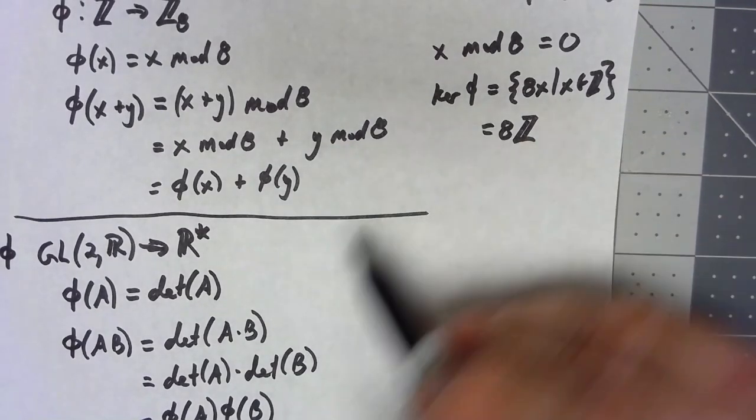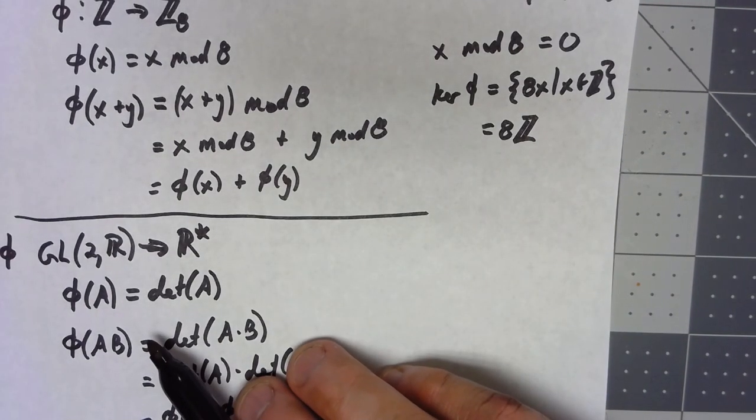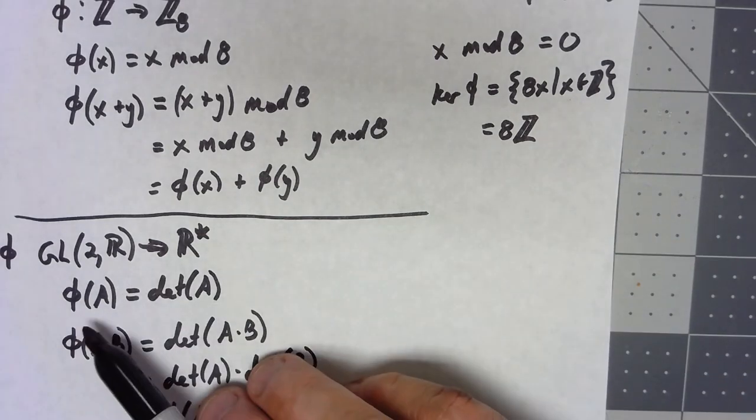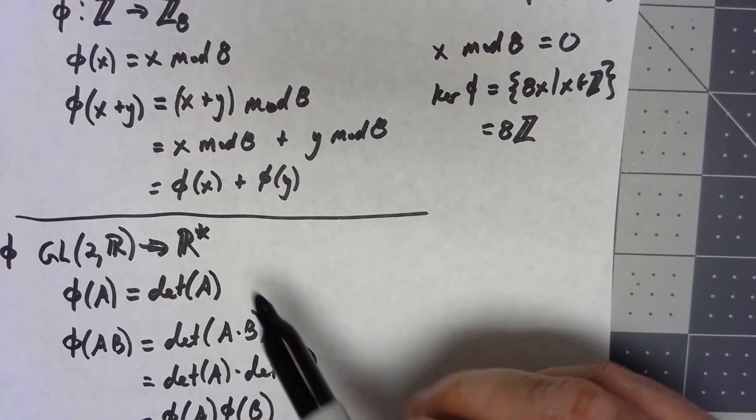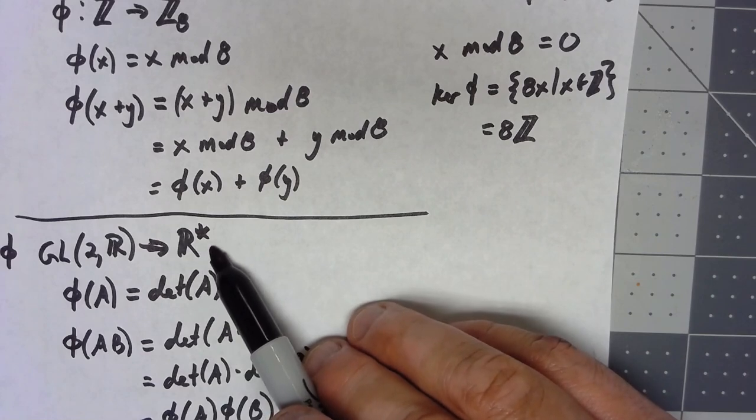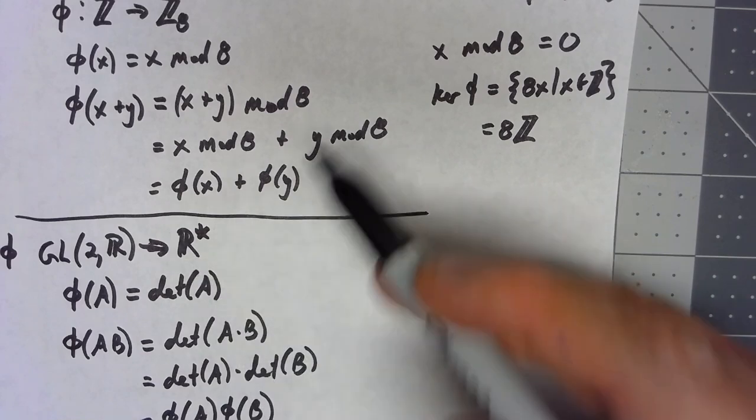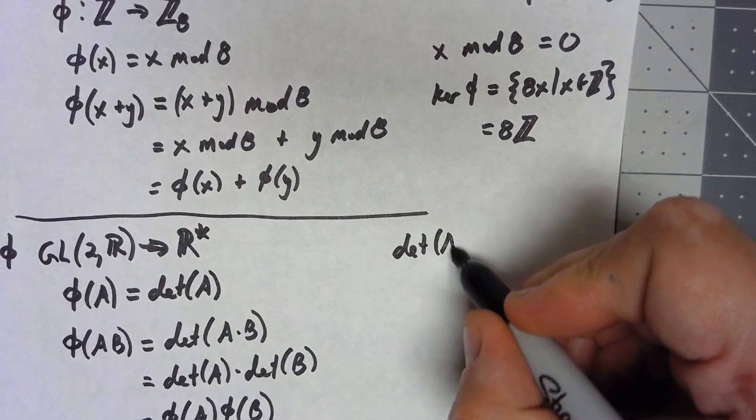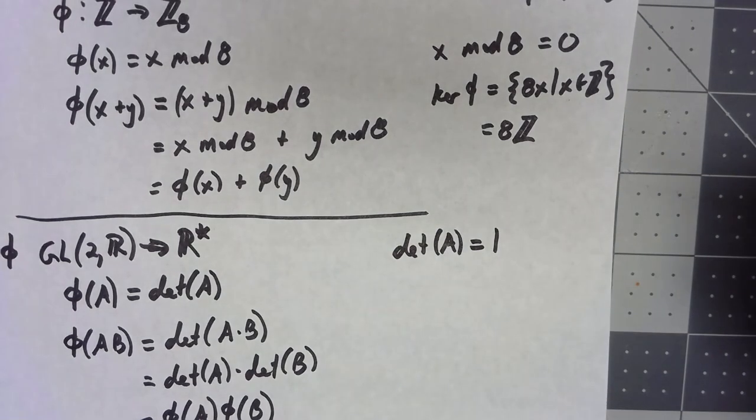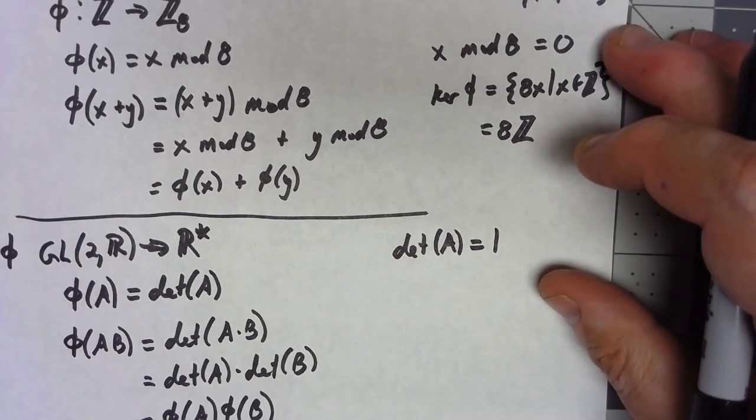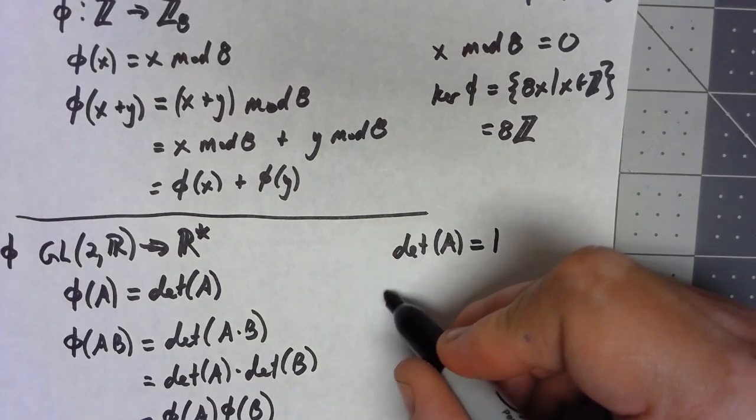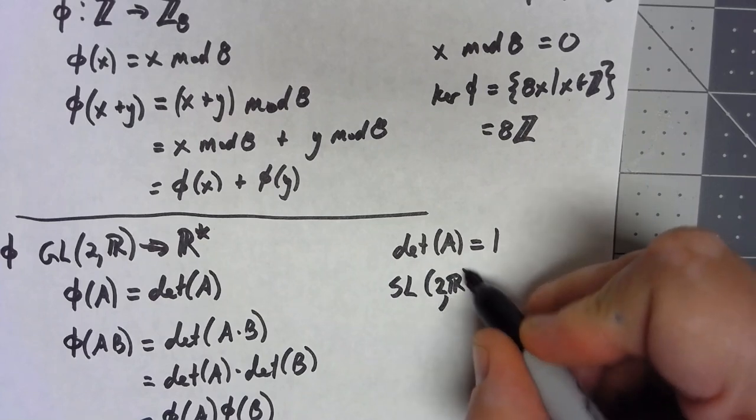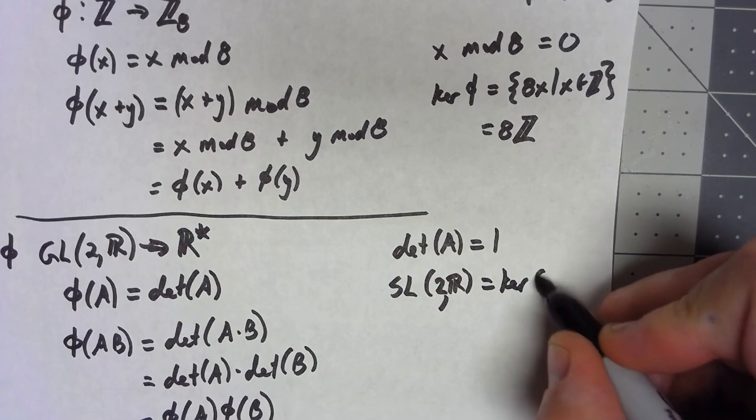If I look here, I want to find all the two by two real valued matrices such that when I take the determinant, I get the identity in R star, which is 1. So we want all the matrices with the determinant of A equals 1. Well, that's actually a group we've already studied. That's what we've called SL2R, is the kernel of that homomorphism.